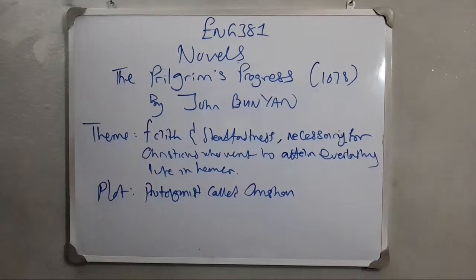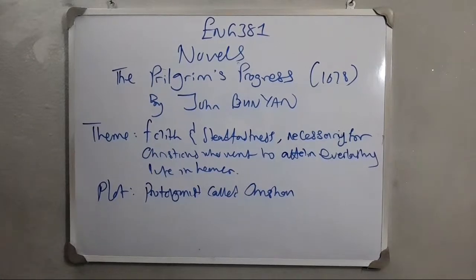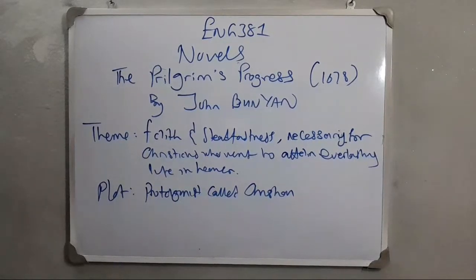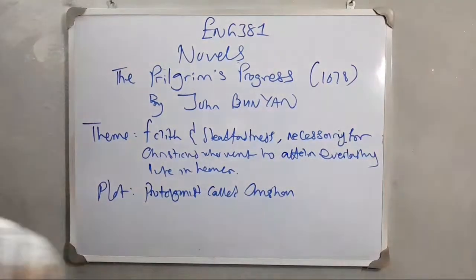He realizes his burden will make him sink into hell, so he decides to seek deliverance to avoid such fate — and that was how the story began. He met encouragement, discouragement, troubles, and tribulation on the road. Characters include Evangelist, who comes to encourage and save Christian whenever he gets into trouble; Apollyon, the destroyer and lord of the City of Destruction, compared to the devil; and Hopeful, a friend Christian met on his way. Settings include the City of Destruction, the Wicket Gate, and various places with wicked people.